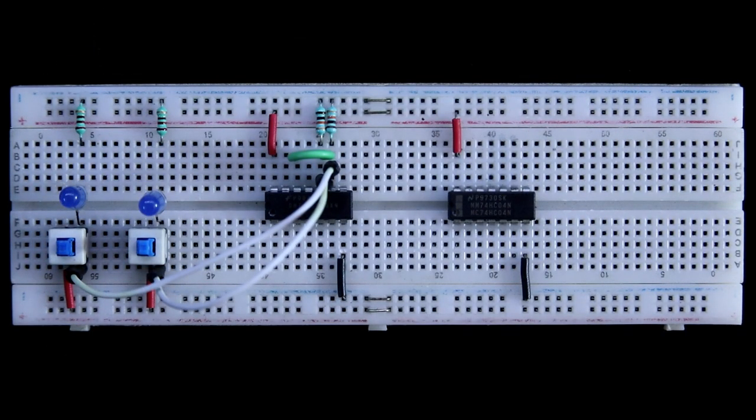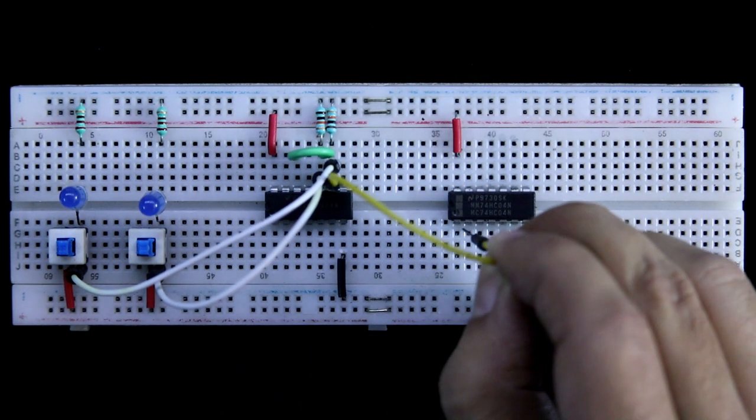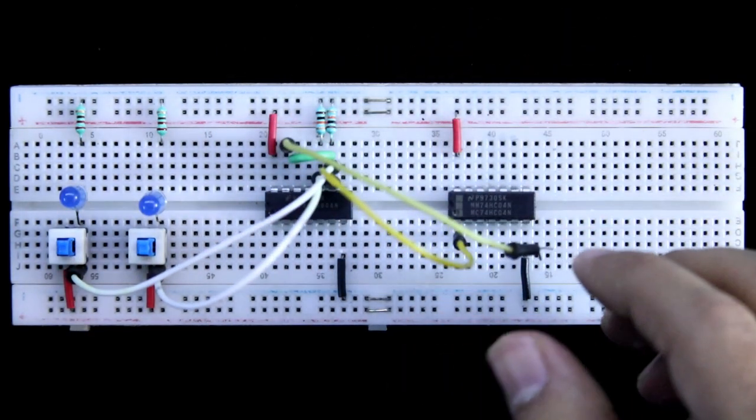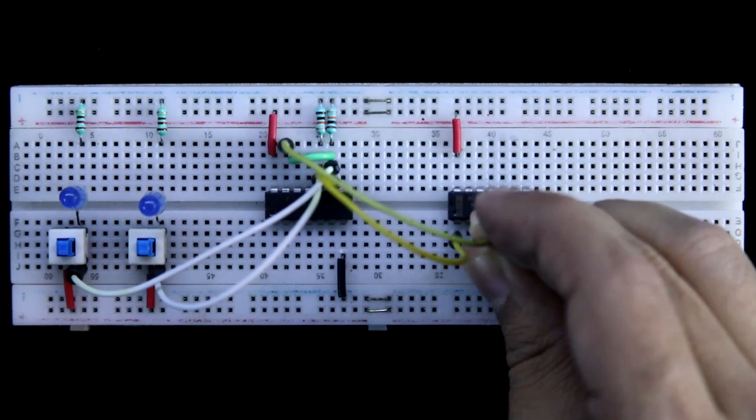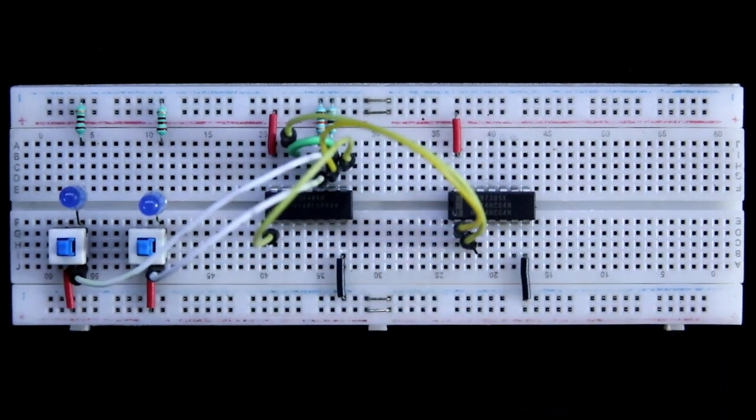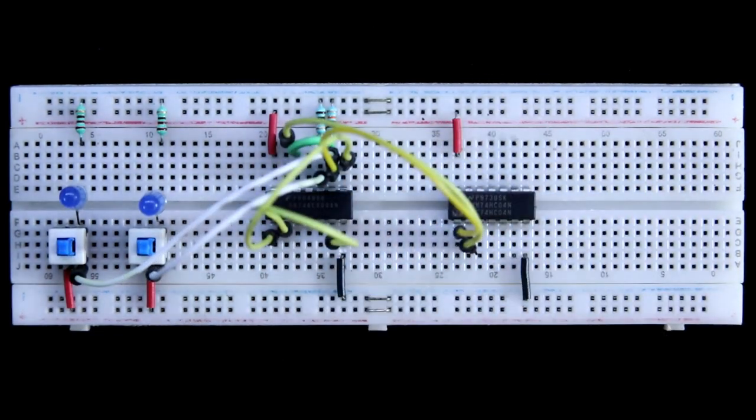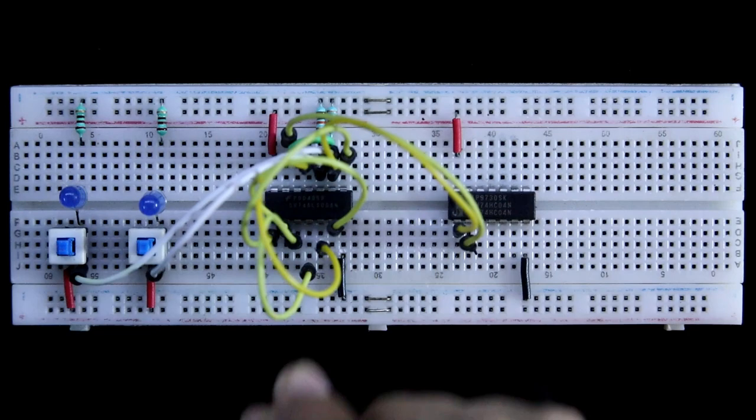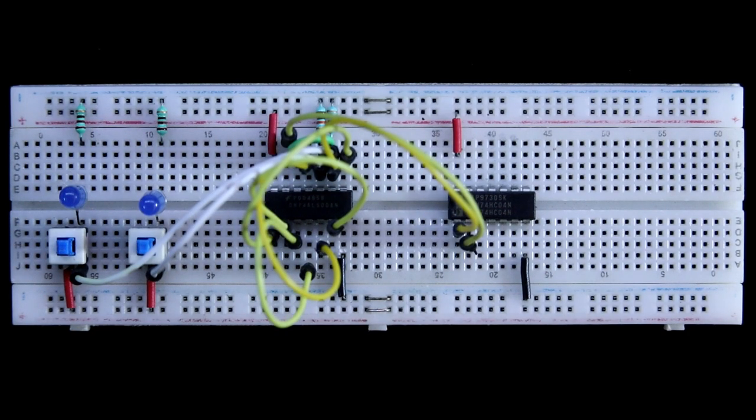In between pin 9 and 13 of 7400 NOT gate is connected. Here it is pin 9 and this is the input of NOT gate, and pin 13 is the output of NOT gate. Pin 8 and 1, 2 and 6, pin 11 and 5, pin 3 and 4. So this is how D flip-flop connection is completed.